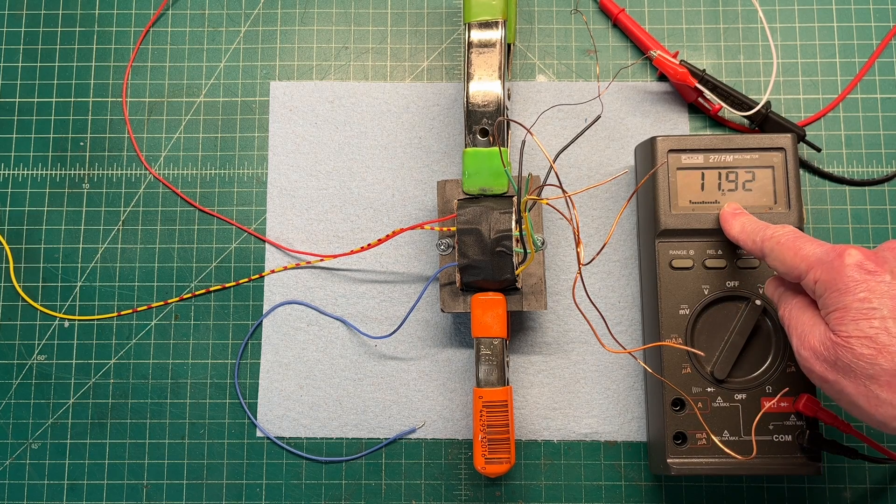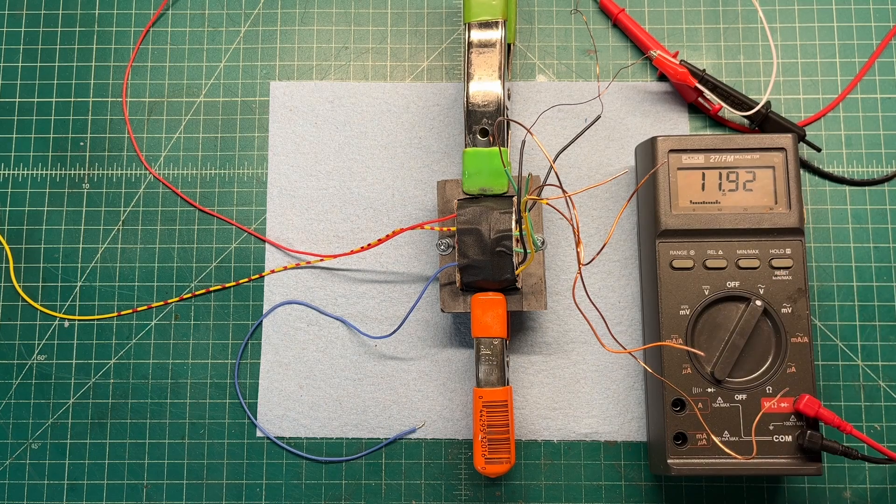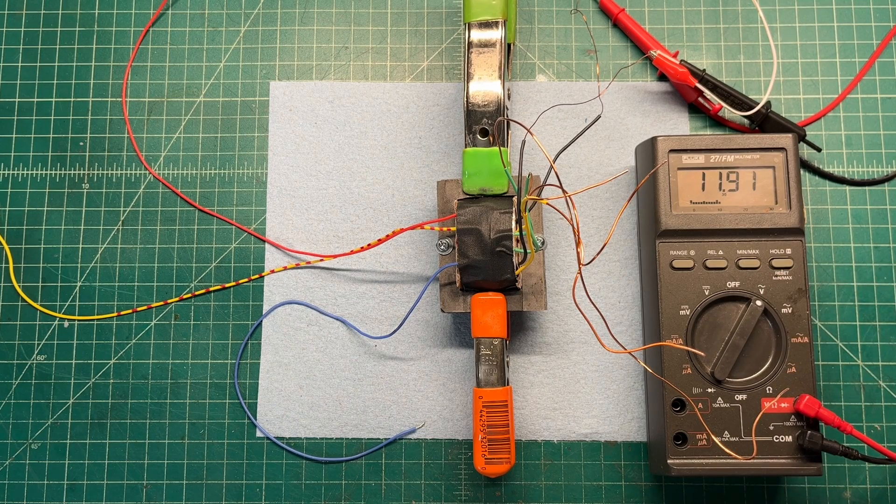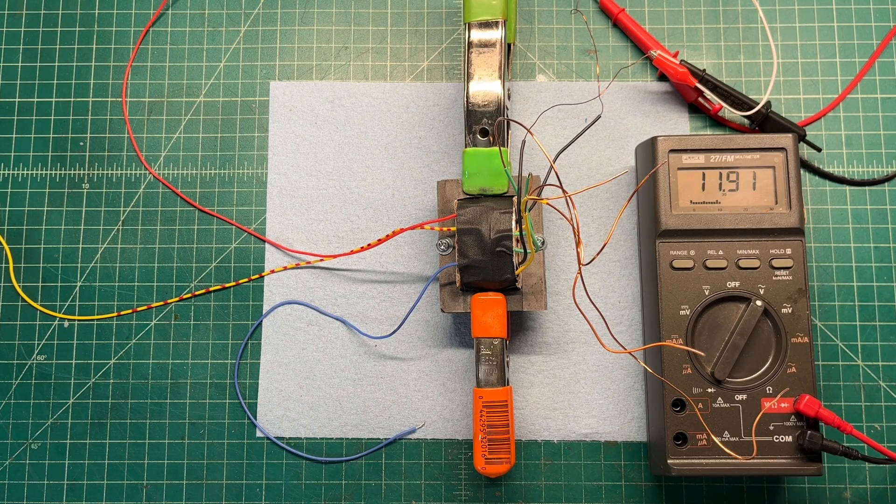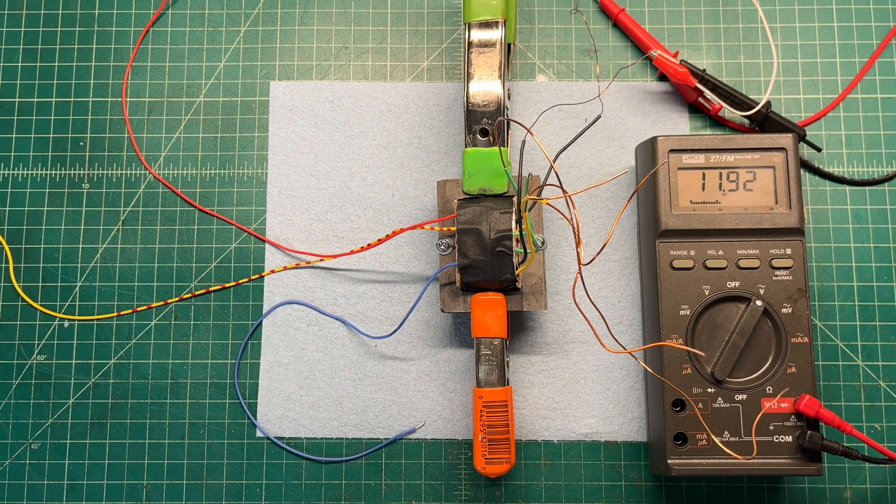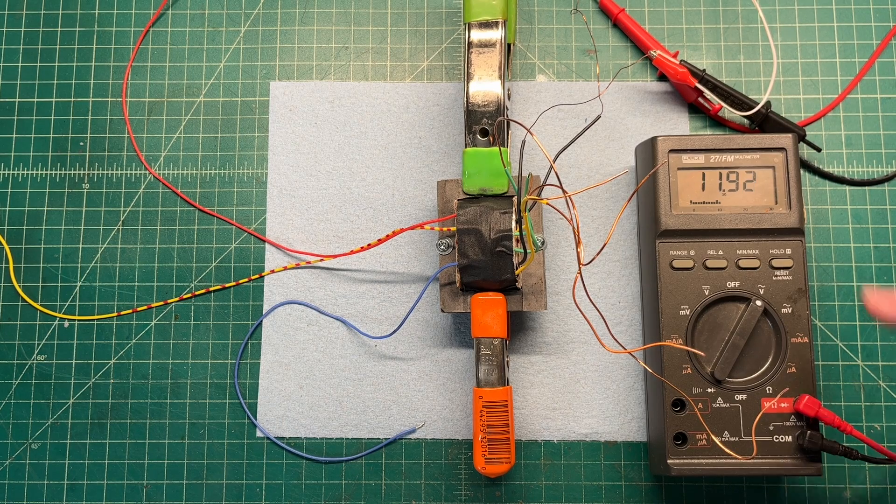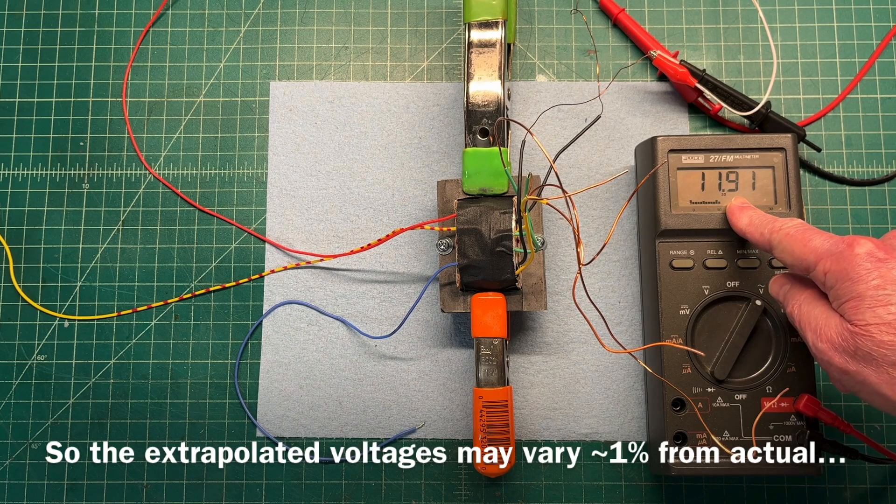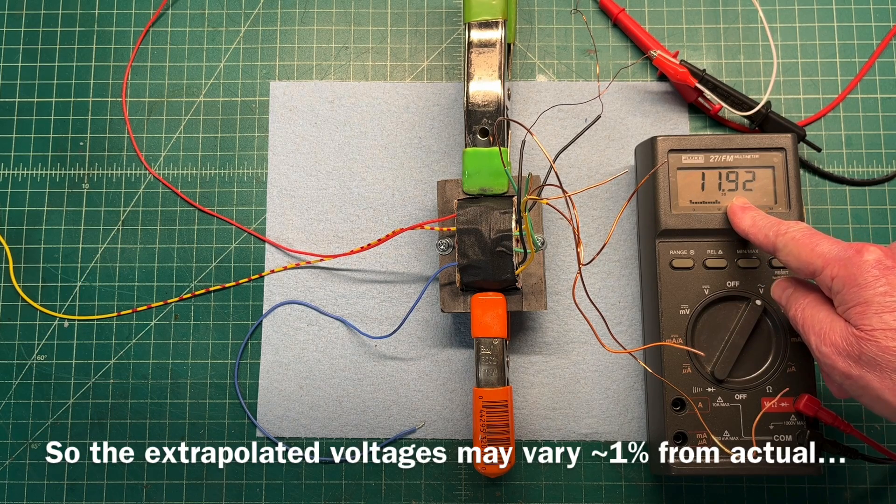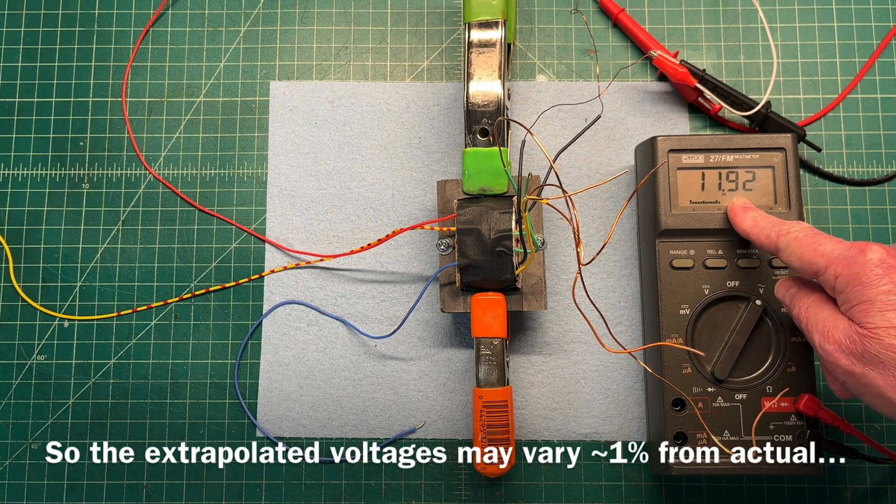And then now you can see the voltage at 11.92. Now I'm back up to about 123.5 volts AC coming in from the mains. We'll just use this number for now, 11.92 for our calculations.